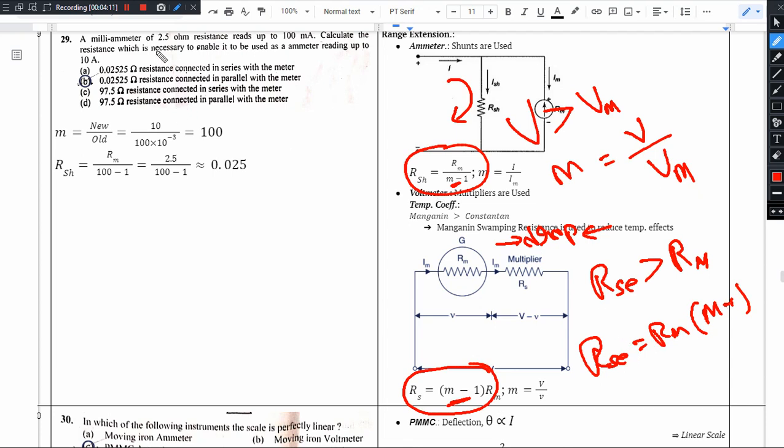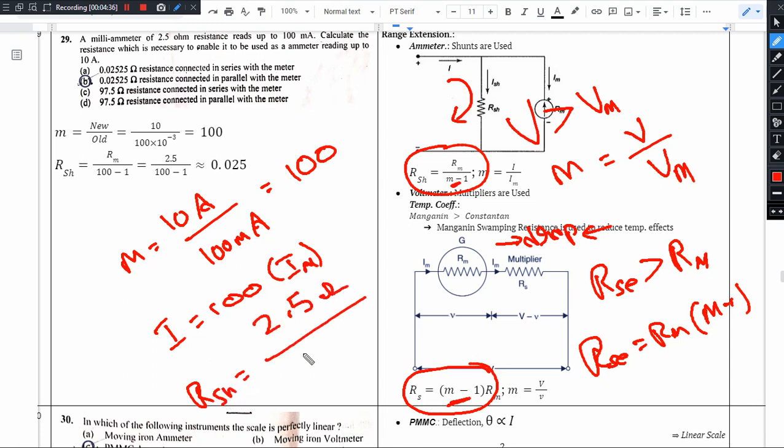In the given question about ammeter, the multiplying factor is 10 amperes divided by 100 milliamperes. My instrument can only measure 100 milliamperes but I need to measure 10 amperes. So my multiplying factor is 100. The current you want to measure divided by the current the instrument can measure, divided by 100 minus 1.